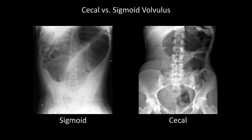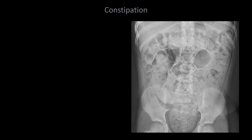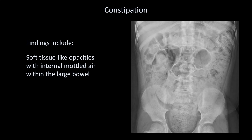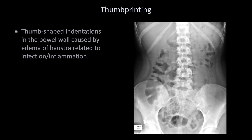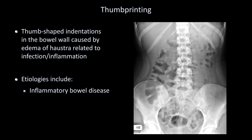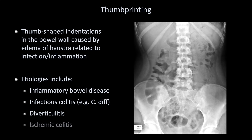Showing the two forms side-by-side for comparison — sigmoid volvulus is the more common form. Here is another classic and much more benign finding: constipation. We see soft tissue-like opacities with internal mottled air within the large bowel — that is all feces. Here is a finding called thumbprinting, in which thumb-shaped indentations in the bowel wall are caused by edema of haustra related to infection and/or inflammation. It is most classically associated with inflammatory bowel disease, but can also be seen in infectious colitis such as C. diff, diverticulitis, and ischemic colitis.